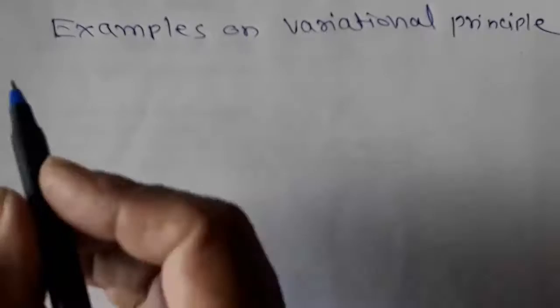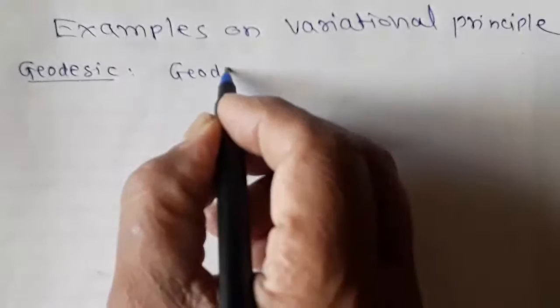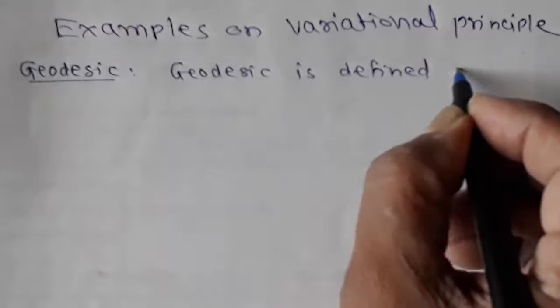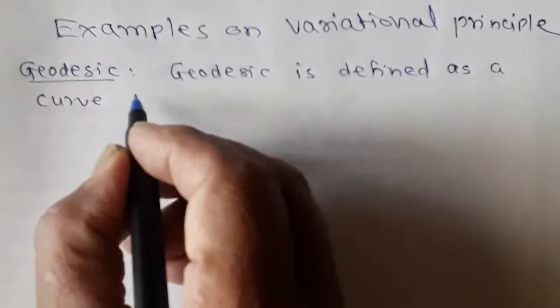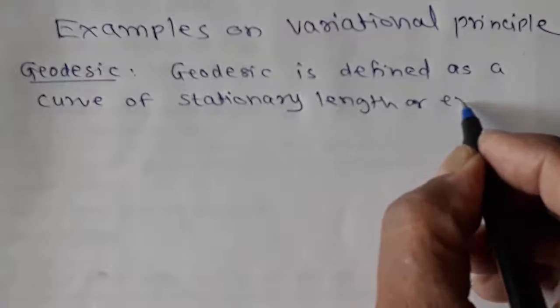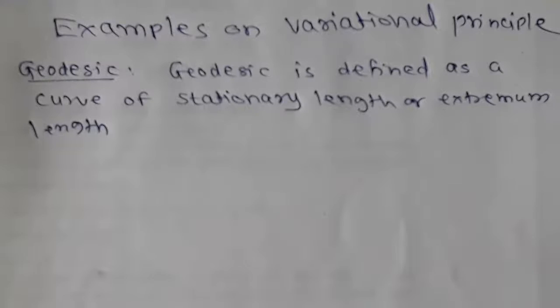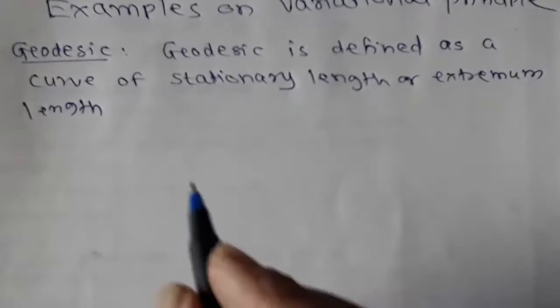In this video, we will solve some examples based on the variational principle. Before going to solve the examples, we shall define a term geodesic. Geodesic is defined as a curve of stationary length or extremum length between any two points.